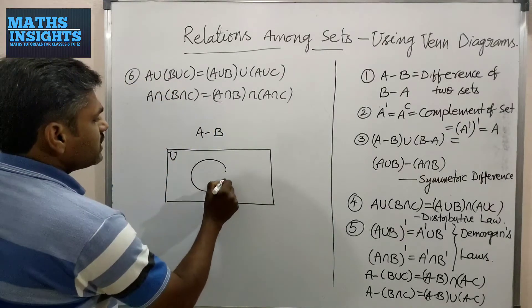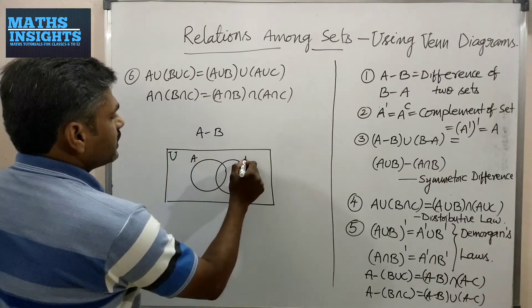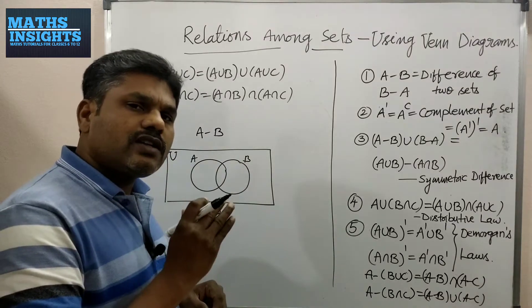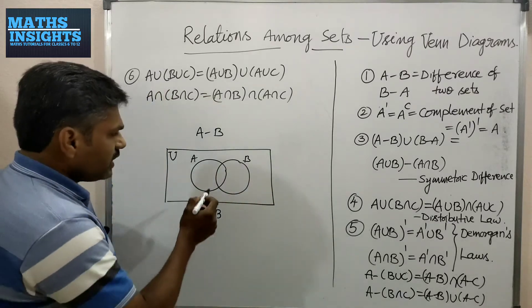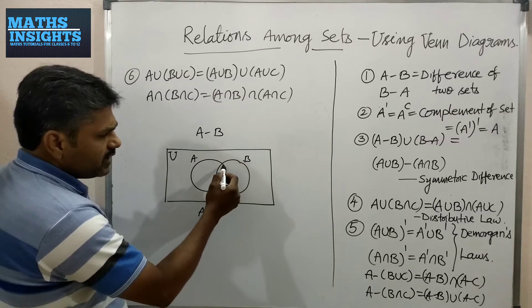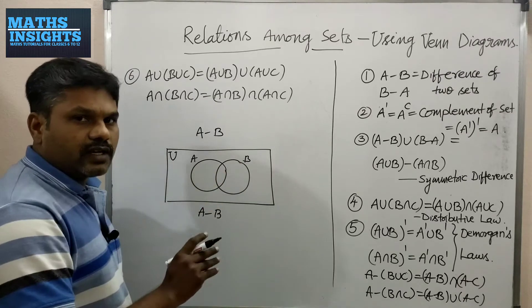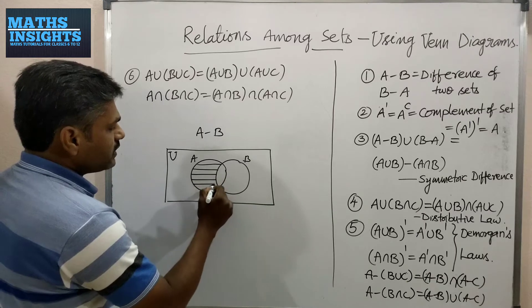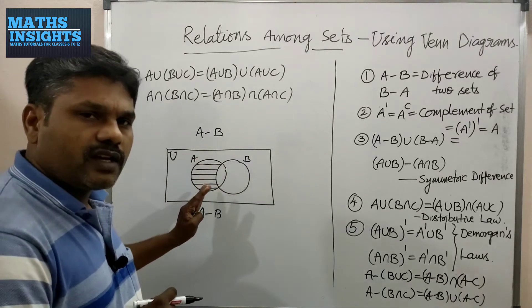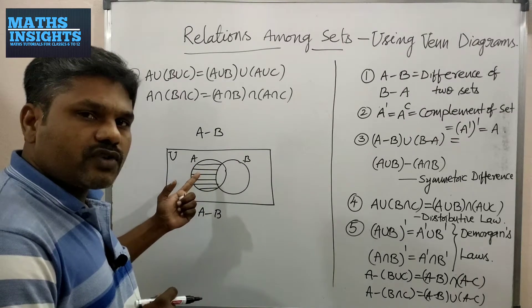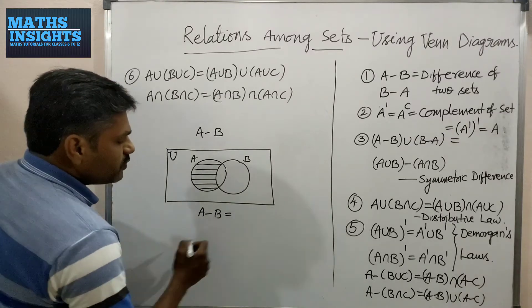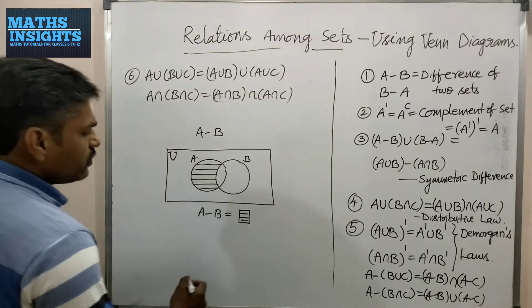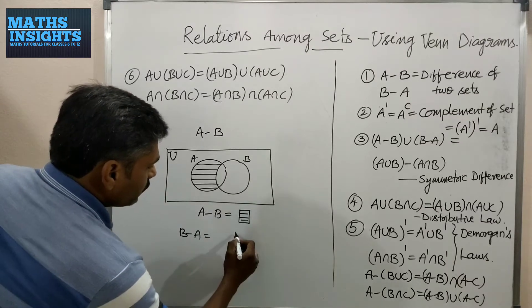I am drawing two circles representing sets A and B. For A minus B — from A we are subtracting the portion of B. This is A and this is B; this is the portion of B within A, and that portion should be subtracted. Therefore draw this area with horizontal lines. The shaded area with vertical lines represents the set A minus B.